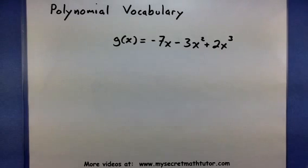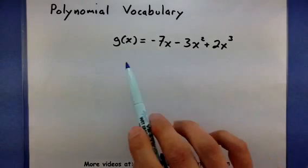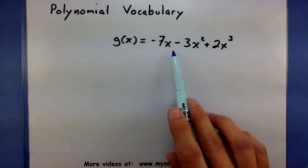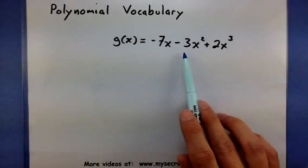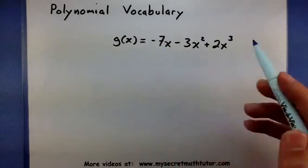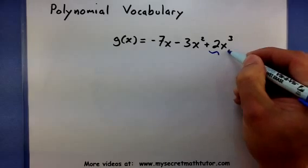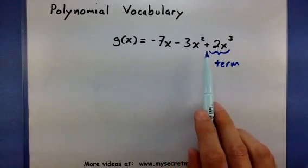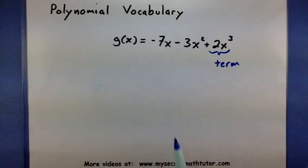Now one of the first things that you want to know about polynomials are what the terms are. Terms are pieces of the polynomial connected by either a plus or a minus. So if we look at my polynomial that I have here, you'll see that it is made up of three pieces: I got a negative 7x, a negative 3x squared, and a plus 2x cubed. Each of these pieces we would consider a term because each piece is connected either using a plus sign or a minus sign.